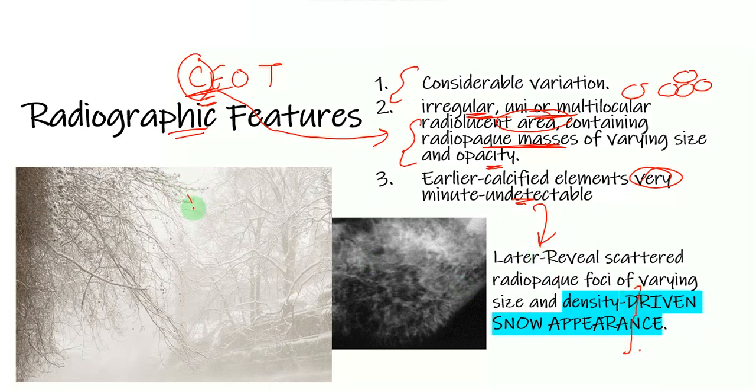If I were to take you to a scene in Narnia and say there was a snowstorm at that time, you would see snow blown away everywhere. This is called the driven snow appearance. If you look at a radiograph, you see the appearance of scattered foci of radiodensity of varying size and density, and this gives it the driven snow appearance.